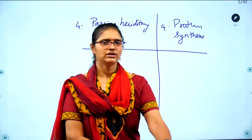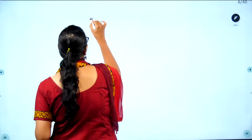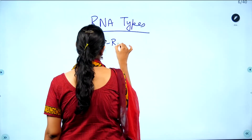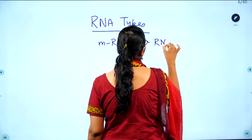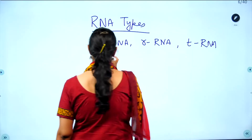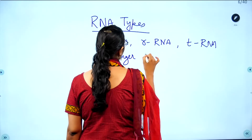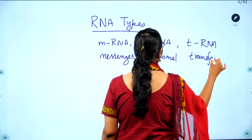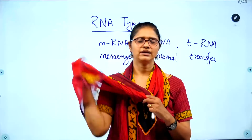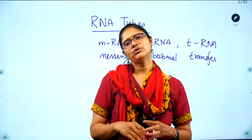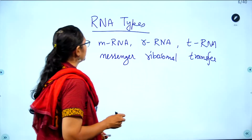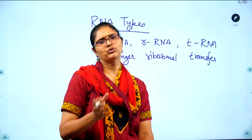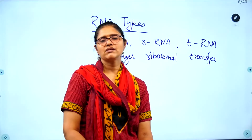RNA is of three types: mRNA (messenger RNA), rRNA (ribosomal RNA), and tRNA (transfer RNA). These types all have different functions, but the main overall role of RNA is protein synthesis.